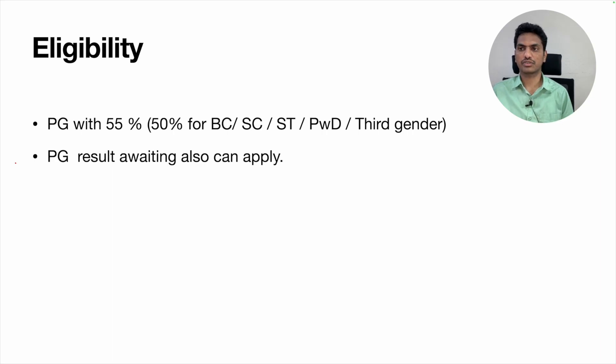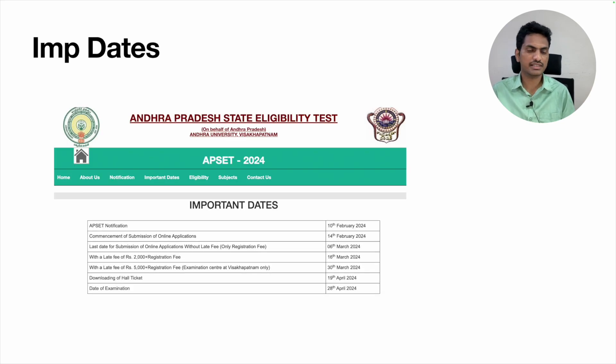In my case also I wrote this exam in my final year. I did not get the result at the time of writing this exam. So I went after taking my provisional certificate from the university and I submitted that provisional certificate and I took the AP SET certificate from the Andhra University. So even though if you are in final year, you are allowed to appear for the exam if your result is awaiting.